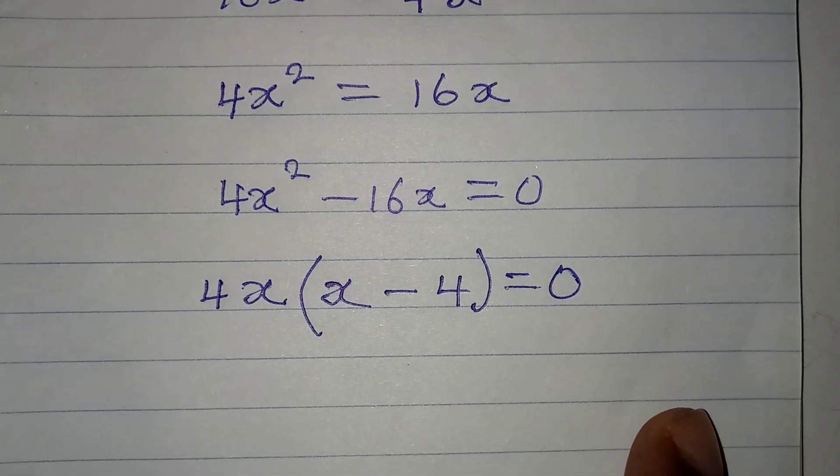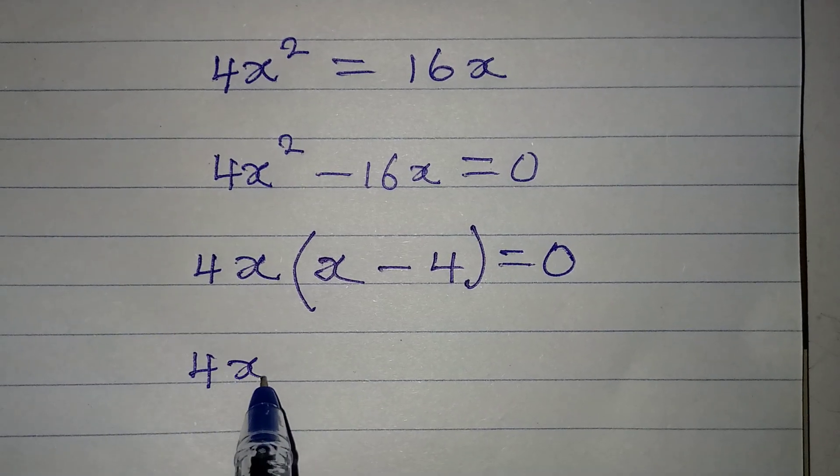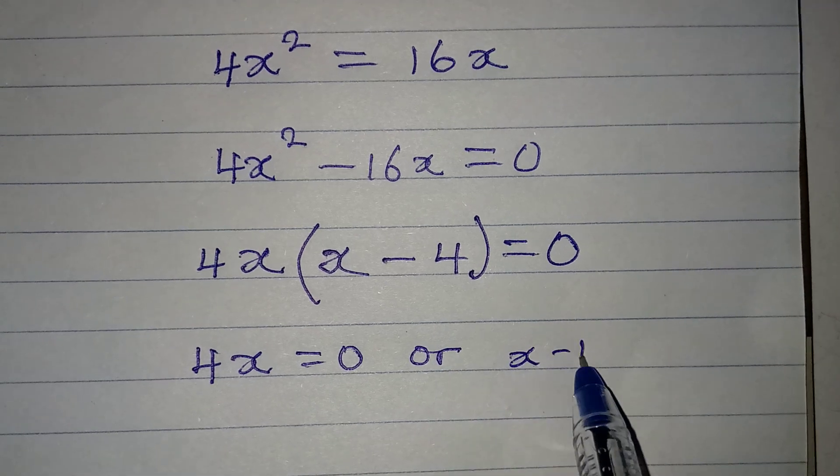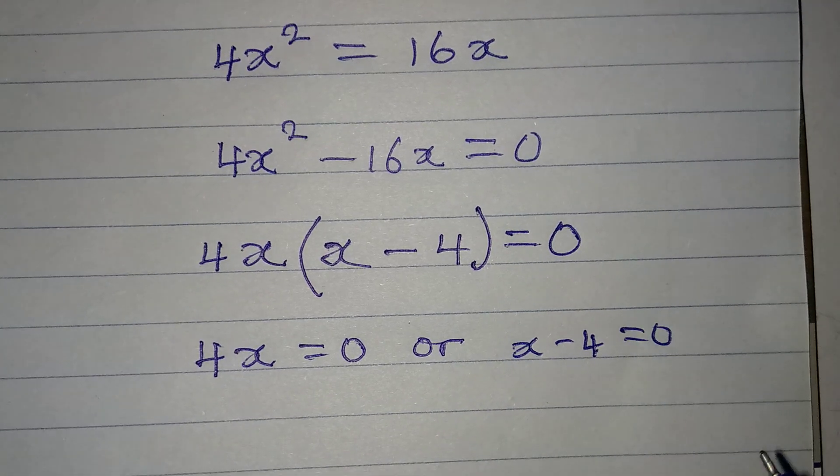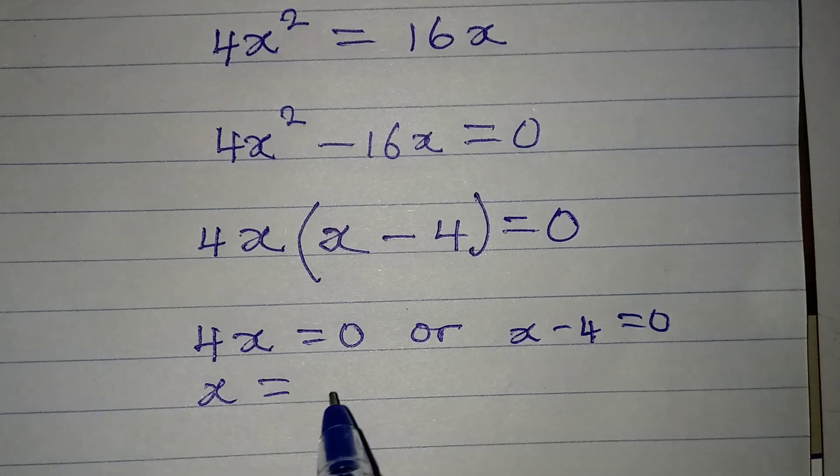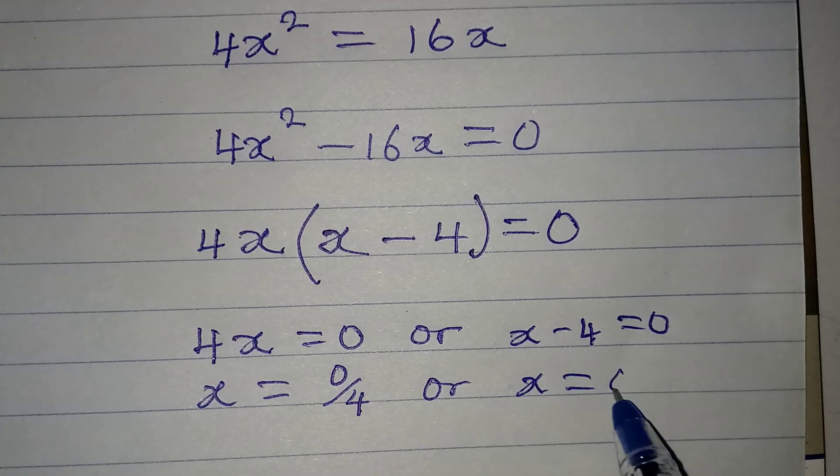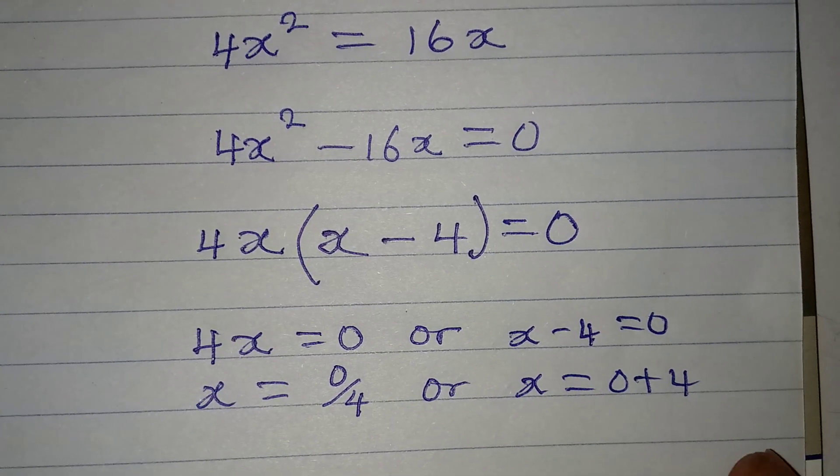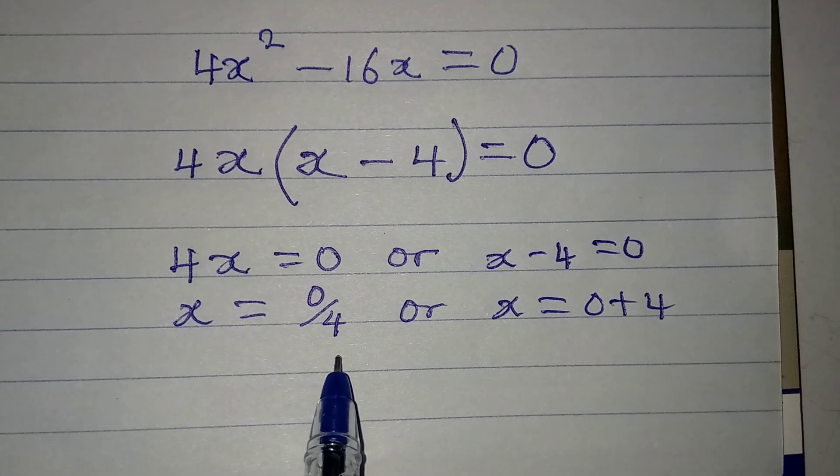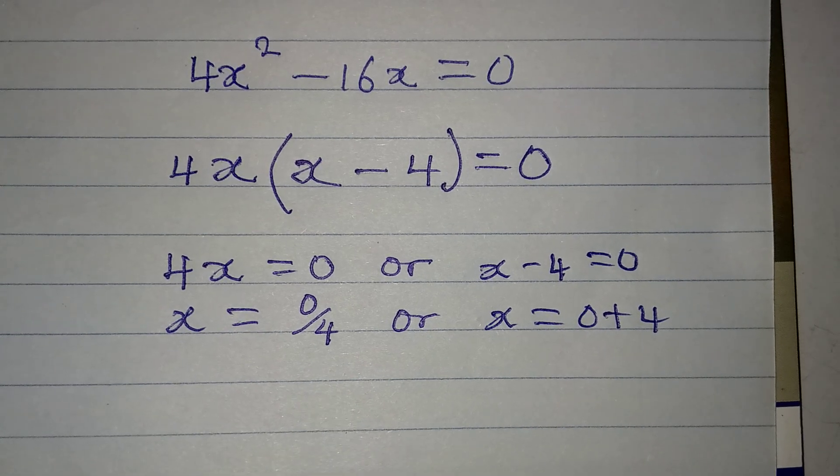And at this point, we apply 0 product rule to say that 4x is either equal to 0 or x minus 4 is equal to 0. If we continue from here, our x will be equal to 0 over 4 or x is equal to 0 plus 4. Now, remember that whenever you have the denominator to be a number greater than 0, that means it is correct.